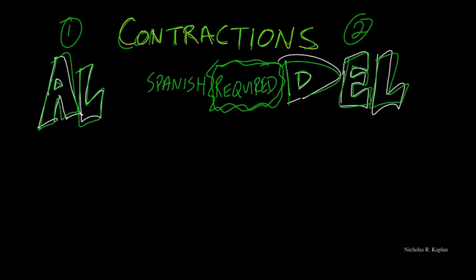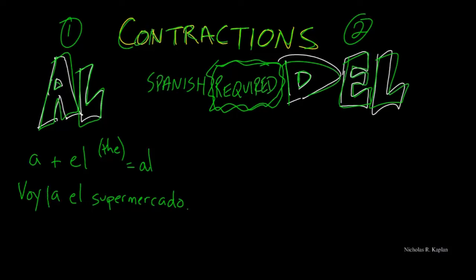There are only two of them. We have 'al' and 'del.' So 'al' is whenever we have a plus el, just the, we will get al. If I'm writing a sentence or talking and I say 'I am going to the,' we have 'voy a el supermercado,' this automatically forms the contraction al.